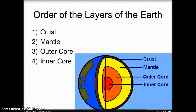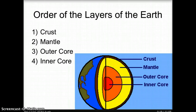There are four main layers of the Earth. The outermost layer is the crust, followed by the mantle, then the outer core, and the deepest layer is the inner core.